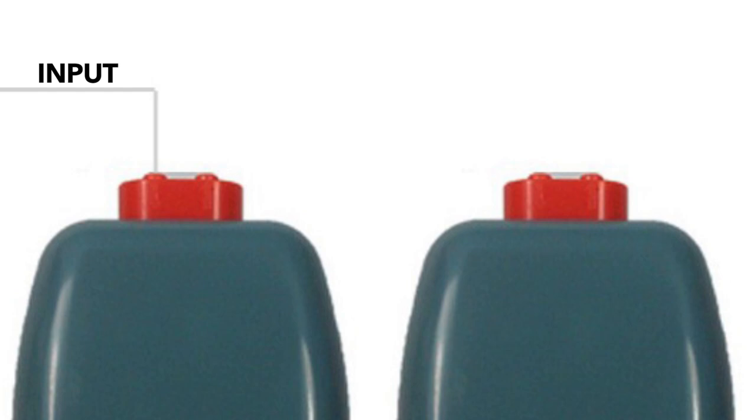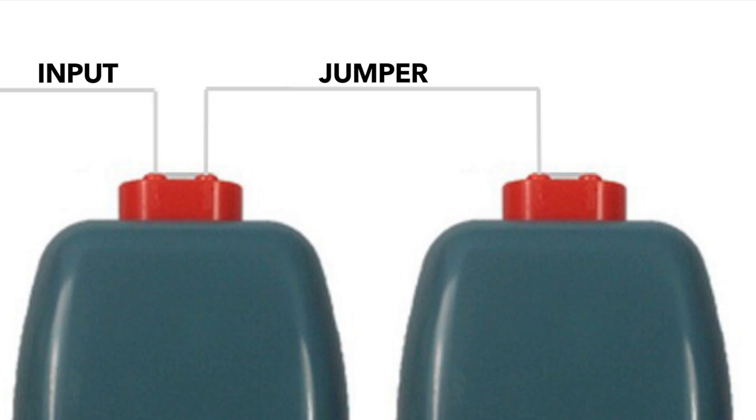Using the same type of tube, make a short jumper from the output of the first aqua lifter and connect it to the input of the second aqua lifter as shown.